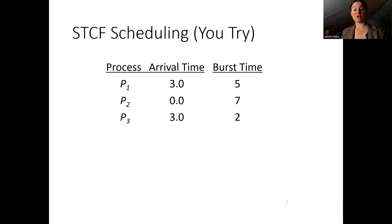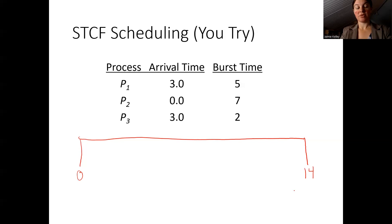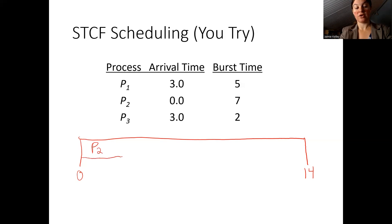Now you try: there are three processes using the same burst times from the Shortest Job First example. Process one and process three both arrive at time three, but now we can interrupt process two. Pause the video and give it a try — note that it's not guaranteed we'll only have three boxes, so give yourself space. Process two will run until at least time three, but at time three it has four milliseconds left while process three has a CPU burst of two, so process three gets to run for its full burst of two milliseconds.